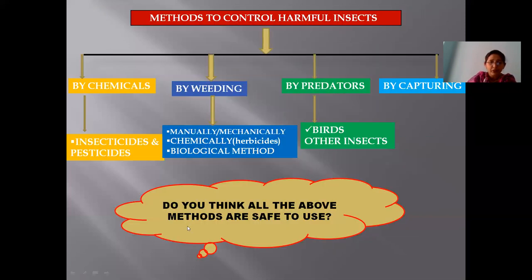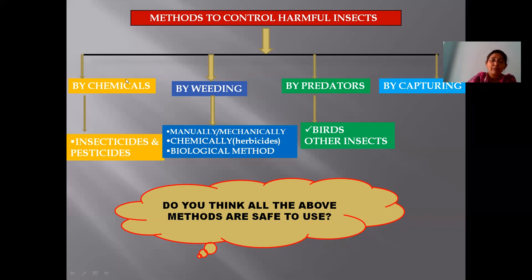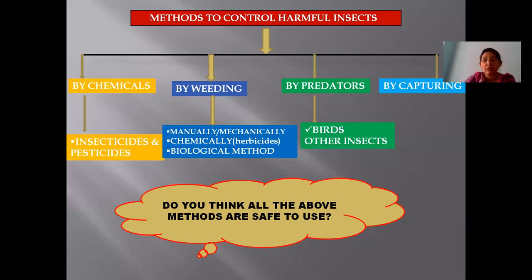Do you think all the above methods are safe to use? I have given four different methods: by using chemicals, by weeding, by predators, and by capturing of the insects. Do you think all these four methods are safe for the environment? No — the most dangerous or harmful one is using of chemicals. If we go on using chemicals, it is very dangerous, as we will see in the further slide.